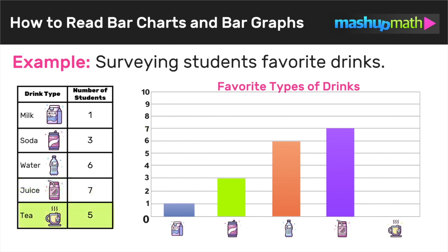Now we just have to construct our final bar for tea. Based on the table, five students chose tea, so we construct the bar over the tea icon starting at zero and going up to five. We have now constructed a bar graph that represents this data. This first example should make you more comfortable with understanding how to read and make conclusions from bar graphs.